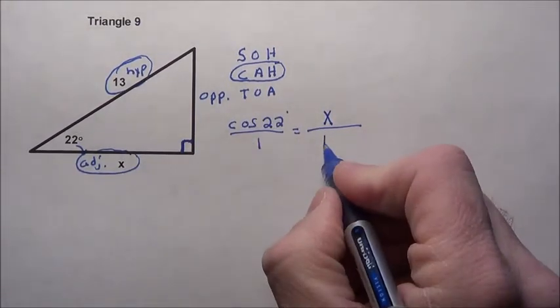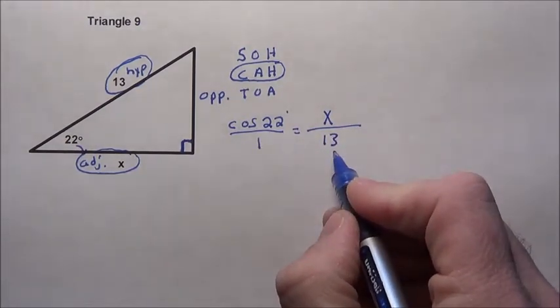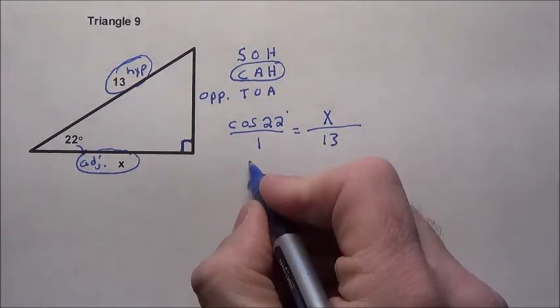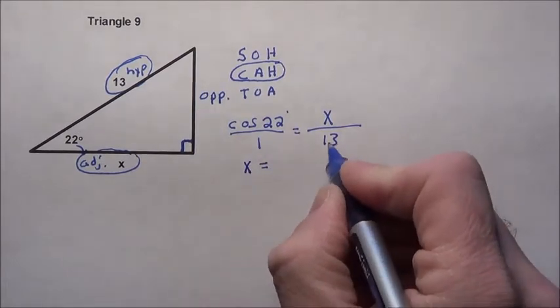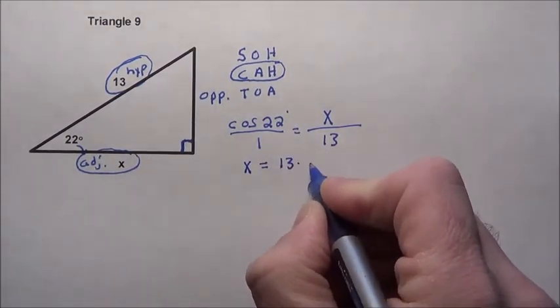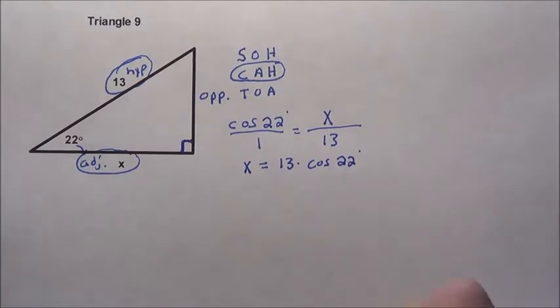I now have a proportion, so I do the means extremes. x times 1 is x. That equals 13 times the cosine of 22 degrees.